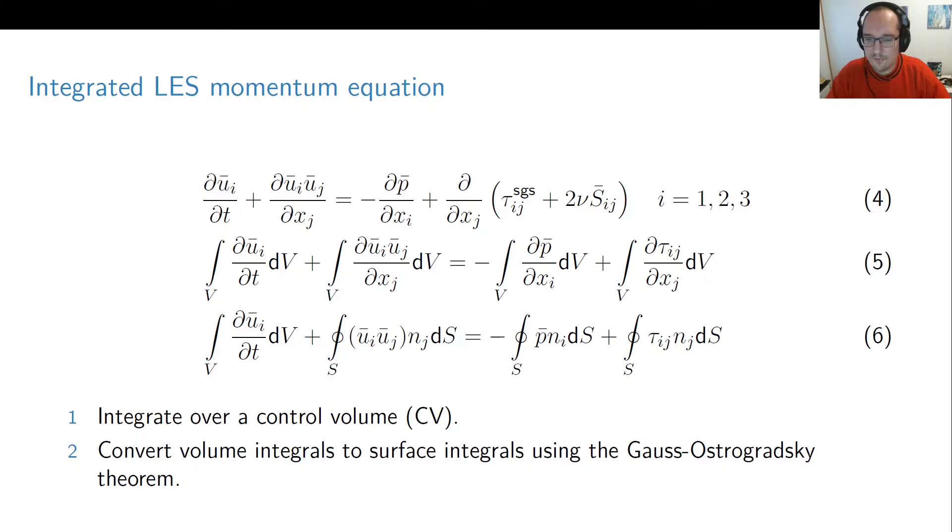In order to derive a finite volume version of the LES momentum equation we have to integrate it over control volume. This is done here on the second row so basically as you can see in front of each term appears this volume integral. Also I have contracted the sum of these two terms into one tau i j here for brevity. The next step is using the Gauss-Ostrogradsky theorem in order to convert the volume integrals into surface integrals where applicable.